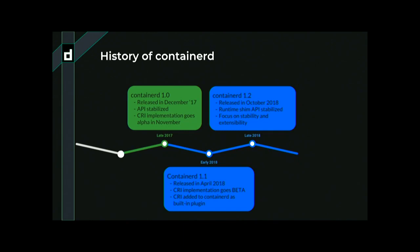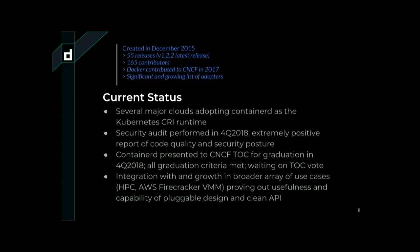Containerd 1.2 was released in October, just about three months ago. The runtime shim API stabilized and is now being used by Kata and Firecracker, as was mentioned in a prior talk here today. We've continued to focus on stability and also extensibility, which we'll look at in the architecture.